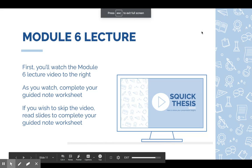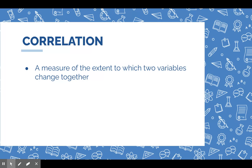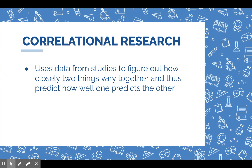In Module 6, which is broken into two parts, the first thing we're going to talk about is the idea of correlation. You might have seen this word before but may not know what it means. Correlation is basically a measure of how closely things change together. It looks at two variables and how they change together, and in correlational research we use data from studies to figure out how closely two things vary together and how well one predicts the other.